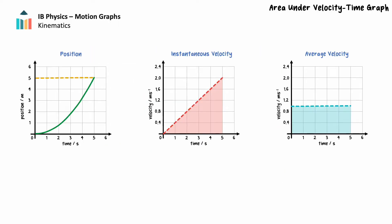Let's examine this quantitatively using the position as a function of time graph, the instantaneous velocity as a function of time graph, and the velocity as a function of time graph that assumes the object moved at a constant velocity equal to the average for the same motion.